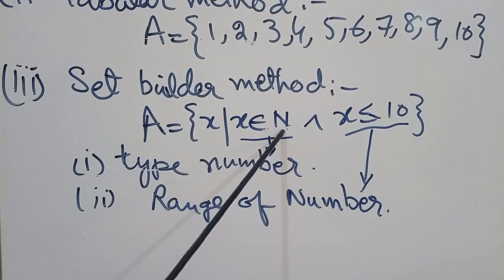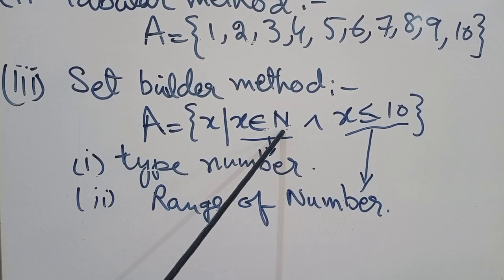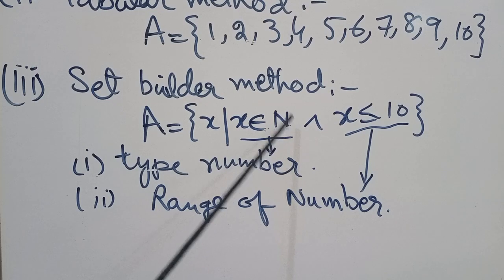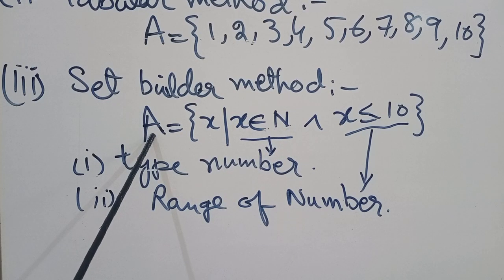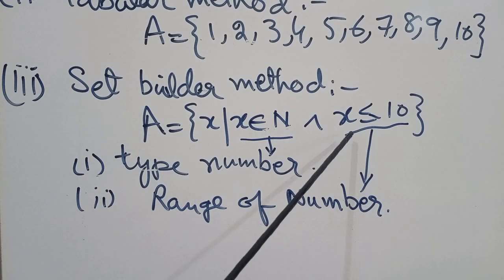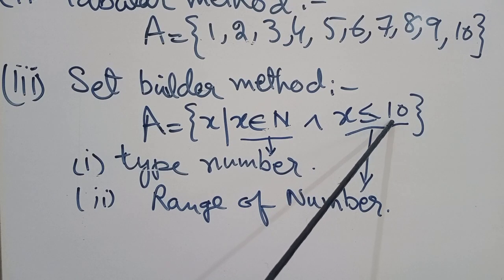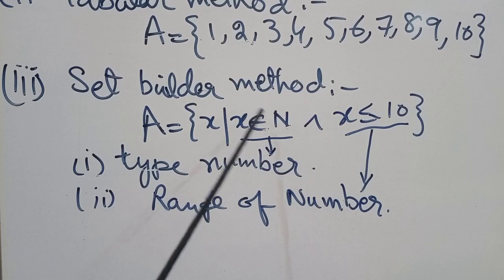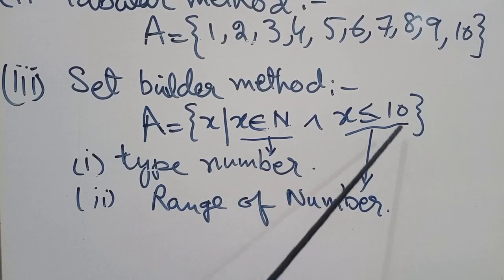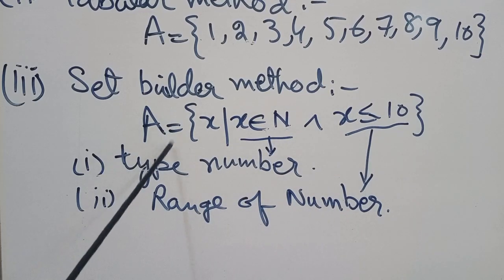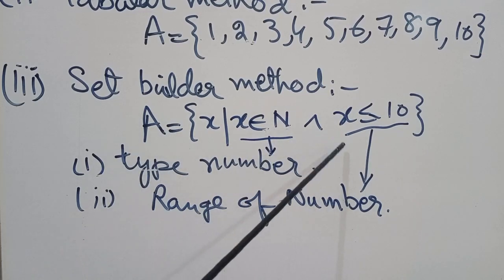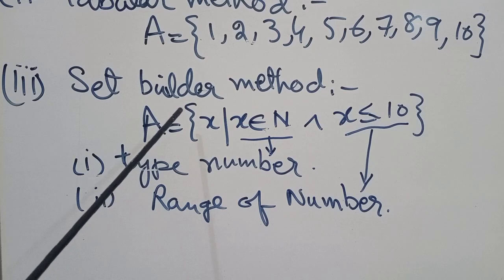The natural number set is an infinite set, and not all natural numbers are included in set A. Set A contains only numbers less than or equal to 10, meaning from 1 to 10 all numbers are included in set A using this method.